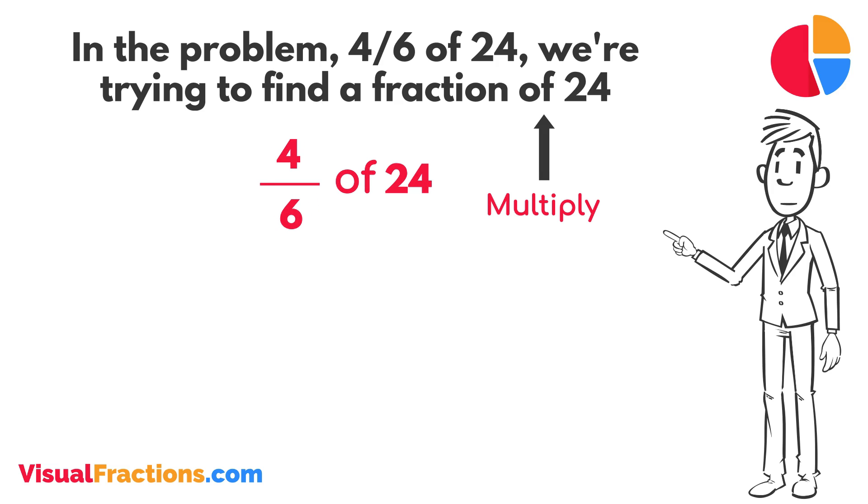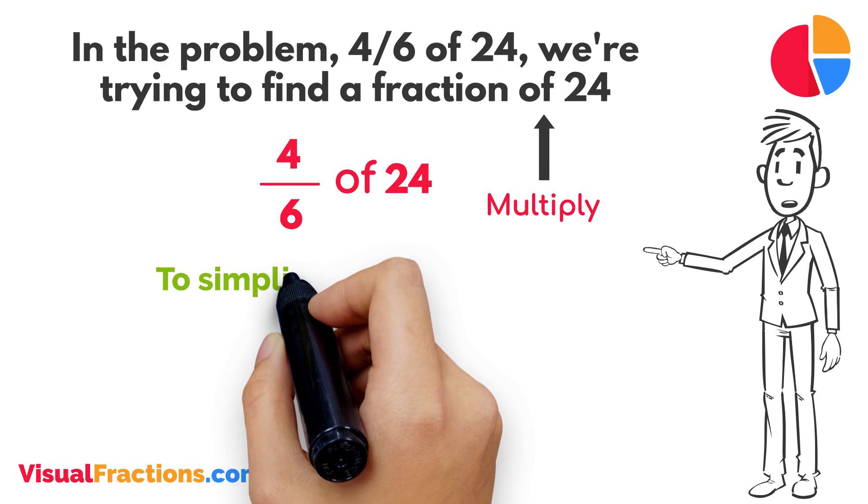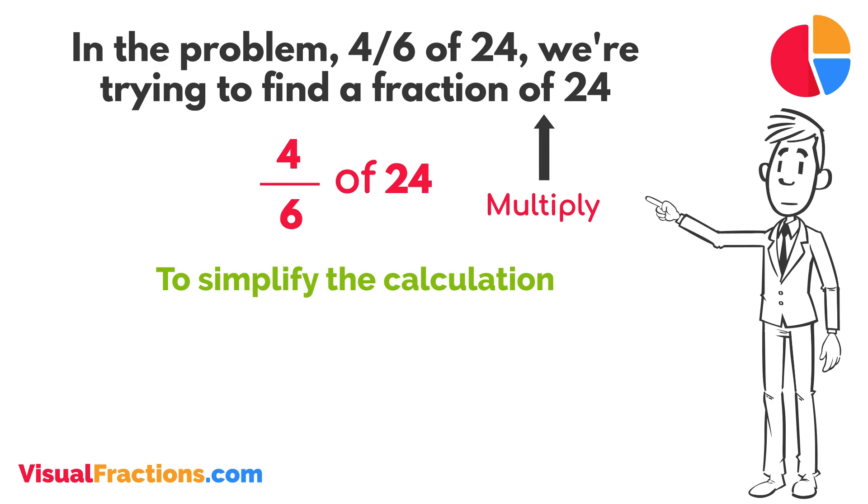To simplify the calculation, we first convert our whole number into fraction form, writing 24 as 24 over 1. This transformation makes it easier to work with our numbers as fractions.